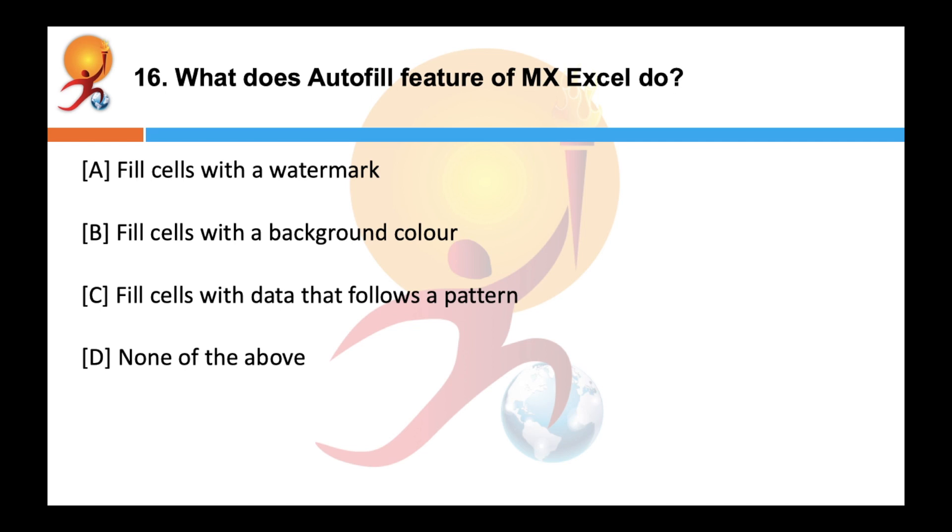What does autofill feature of MS Excel do? Correct answer is C. MS Excel's autofill feature is used to fill cells with the data that follows a pattern or that is based on data in other cells. It is basically a helpful feature making data entry more efficient and easy.